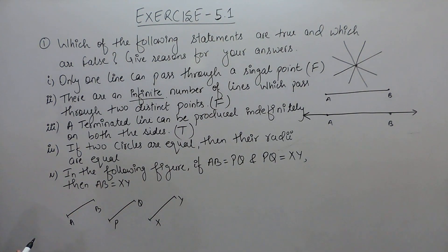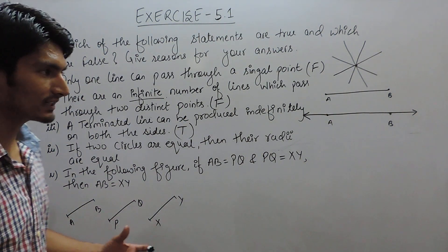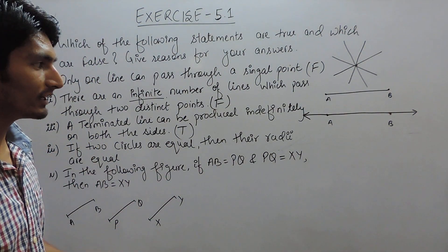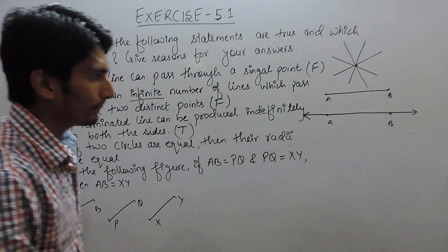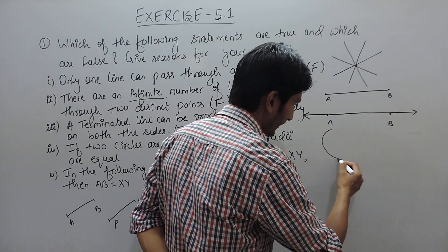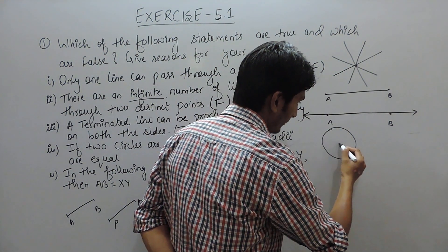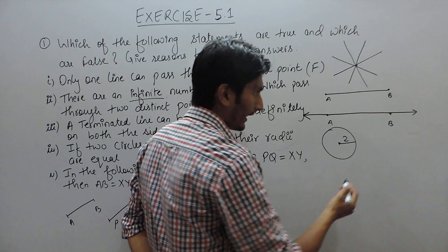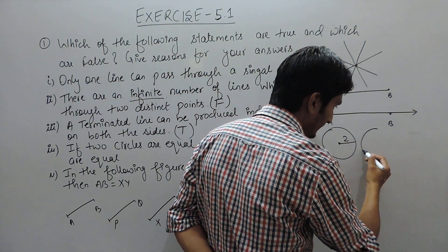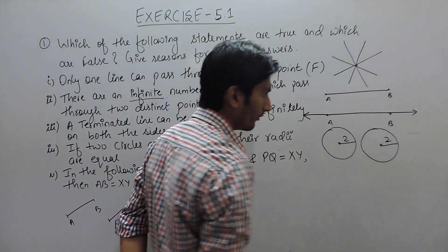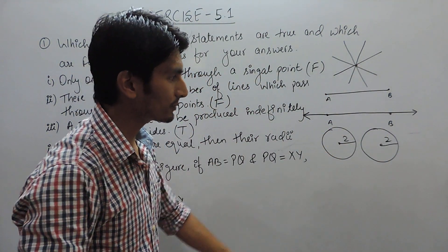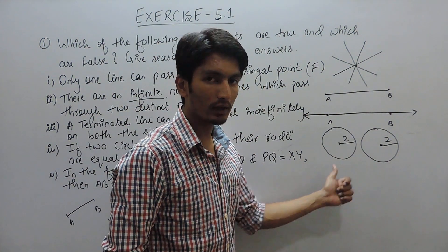Fourth statement: if two circles are equal then their radii are also equal. This can be understood the other way: if you are drawing two circles with radii 2 and another circle with same radii 2, obviously these two circles must be identical or similar. So if two circles are equal then their radii must be equal.